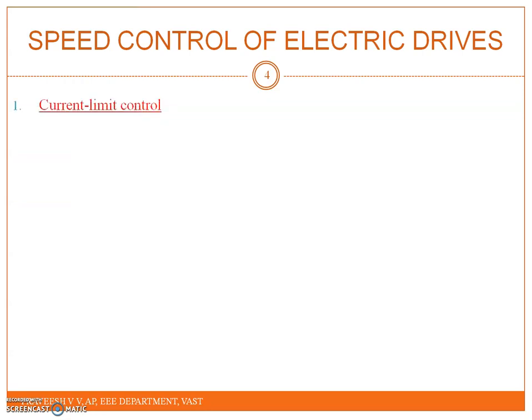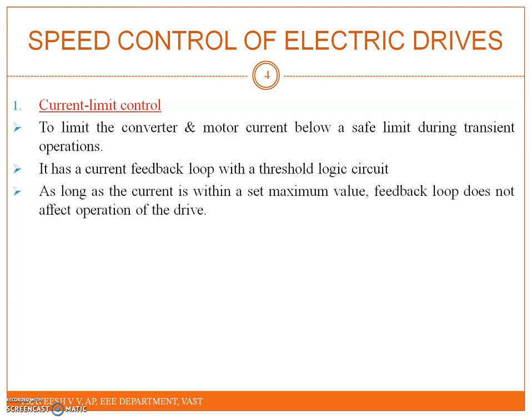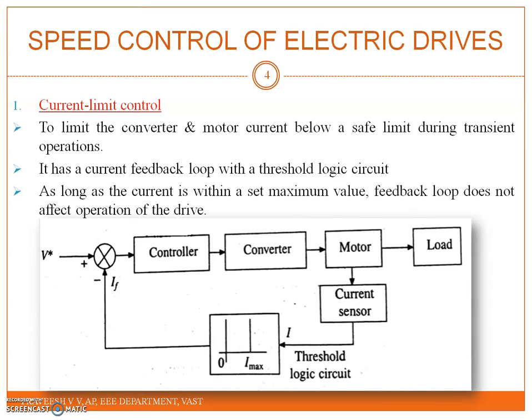The first case is current limit control, which limits the converter and motor current below the safe limit during transient operations. This uses a current feedback loop with a threshold logic circuit. As long as the current is within the set maximum value, the feedback loop does not affect the normal operation of the converter.